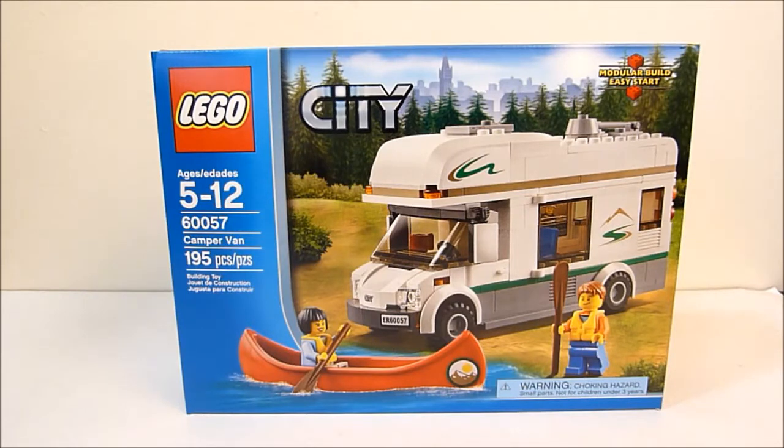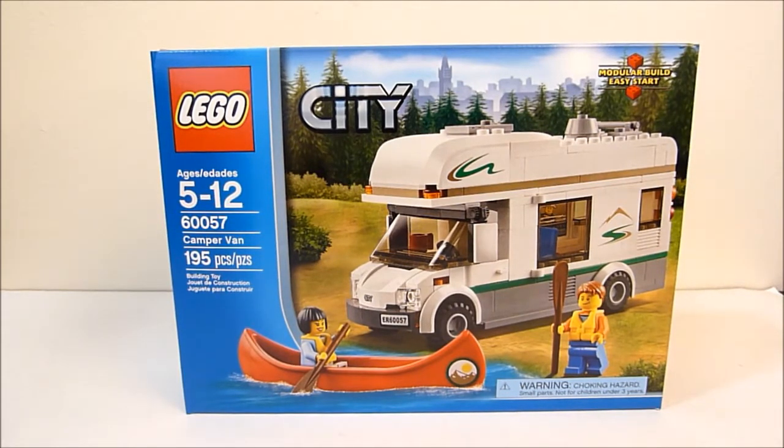What's going on YouTube, Rob A again and today we're going to be taking a look at Lego City set number 60057, Camper Van. The set has 195 pieces, comes with two minifigs, and retails for around $20 to $25.